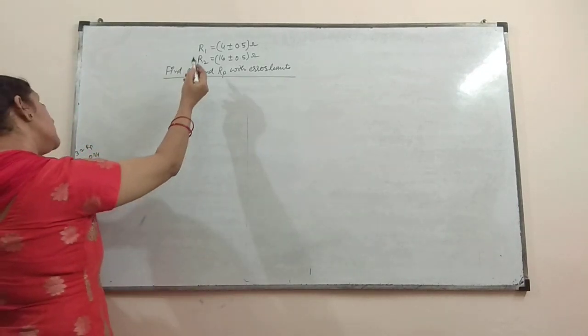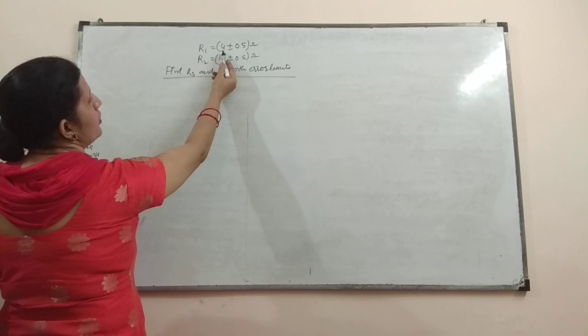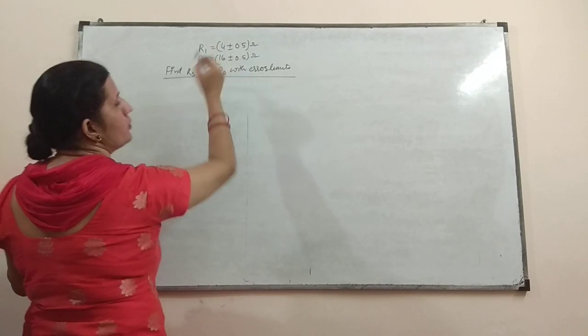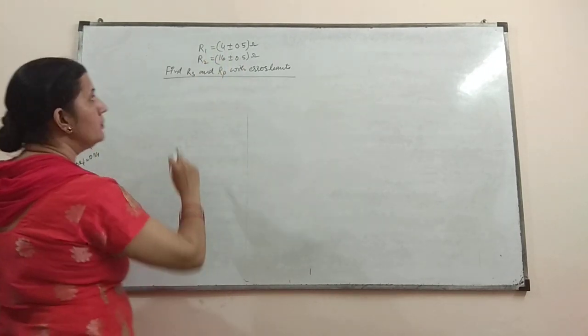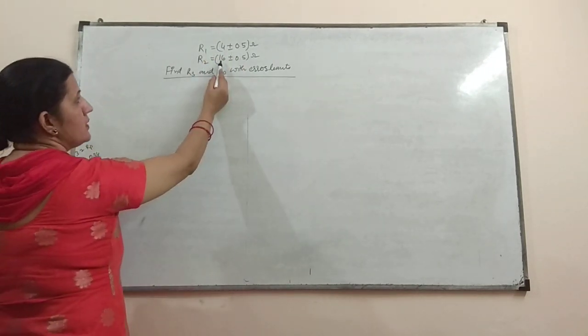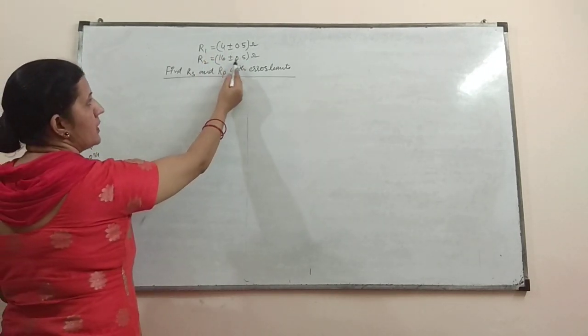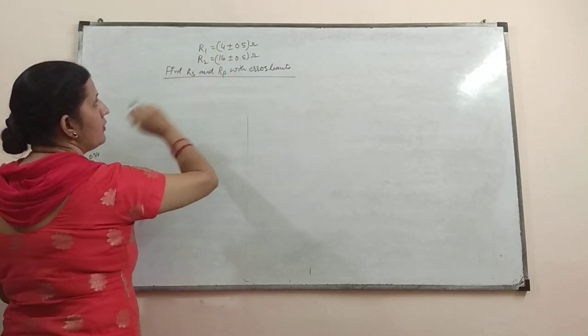What is this? R1 is equal to 4 plus minus 0.5 ohm. R2 is 16 plus minus 0.5 ohm.